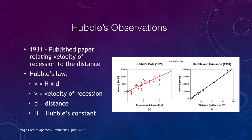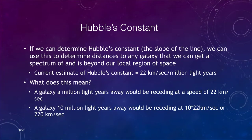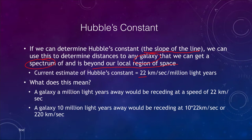Hubble's constant is the slope of the line we saw in the previous slide. If we can figure that out, we can use it to determine the distance to any galaxy that we can get a spectrum of — beyond our local region of space. Our current estimate of Hubble's constant is about 22 kilometers per second per million light years. This means a galaxy at one million light years away would be receding at 22 kilometers per second, and a galaxy at 10 million light years away would be receding at 220 kilometers per second.